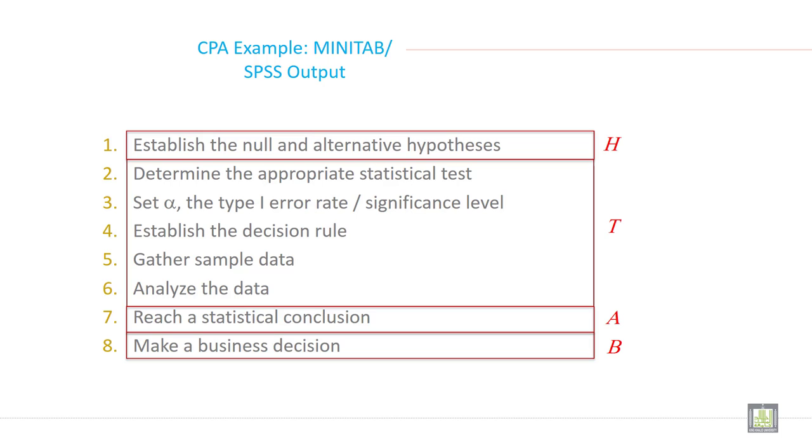In hypothesis testing there are some terminology you need to remember. First is one-tail, then two-tail. Then type 1 error, type 2 error. These are important terminology used in hypothesis testing.